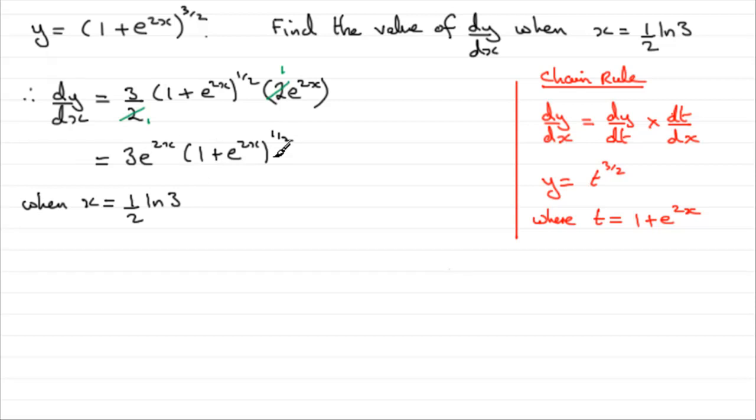If we're doing this, we get dy/dx equals 3 times e^(ln3), then we've got the brackets 1 plus e^(ln3), and this is all to the power of 1/2.